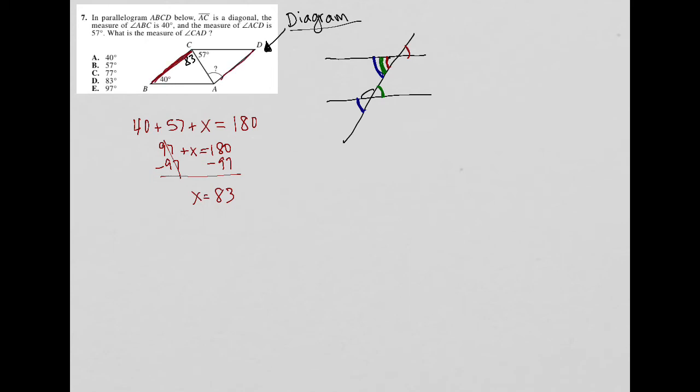Is that going to help me at all? Well, I like to sometimes extend my lines to see if it's useful. So I extend these lines. And then if I extend this diagonal, that's my transversal. And then I can see a little bit more clearly that this 83 is alternate interior to the question marked angle. And if you remember alternate interior, you'll remember that those angles are congruent, meaning that this angle here is also 83. And therefore, the answer is choice D.